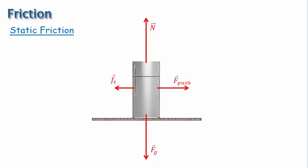This dynamic of the static friction force canceling out the pushing force — or whatever the forces are that are parallel to the contact surface — will continue, but there is a maximum value that the static friction force is able to obtain. Let's say the static friction force shown in the diagram has reached its maximum value. And now when the person pushes even harder, the pushing force increases, but this time the static friction force can't increase.